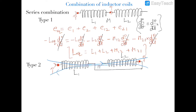The equivalent EMF equals the EMF induced in the first coil due to self induction, plus EMF in the second coil due to self induction, minus EMF induced in the first coil due to mutual induction, and minus EMF induced in the second coil due to mutual induction. This negative sign signifies that the flux linked with one coil is in the opposite direction to the flux linked due to the other coil.